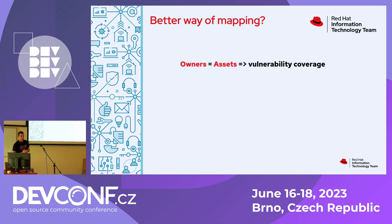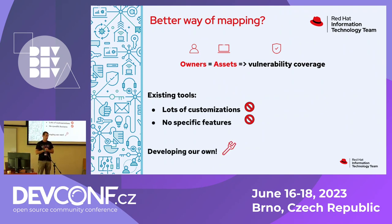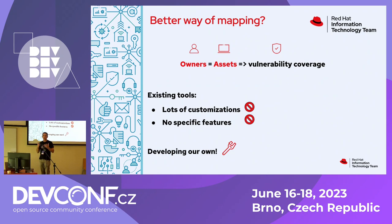We were looking for options to get that mapping sorted. We started looking at different solutions that exist — open source, commercial tools — but they just required a lot of customizations to get the exact mapping of owners and assets at Red Hat. Some that did sort of fit just didn't have the exact features we needed and still required a lot of work. So that didn't really make sense at that time, and we decided to put some scripts together.